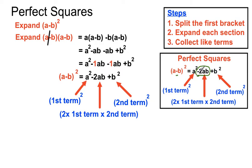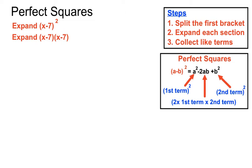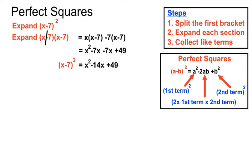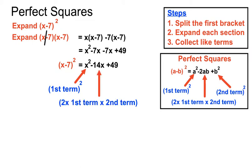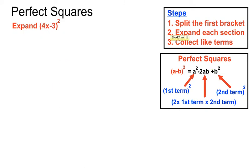In each of these cases, if we expand carefully using the long method, we end up with x squared minus 14x plus 49. Let's see that it fits the pattern: the first term x squared, then two lots of x times minus 7 gives minus 14x, and the last term minus 7 squared becomes plus 49 because a minus times a minus always makes a plus. So it follows the rule whether we do it the long way or the short way.